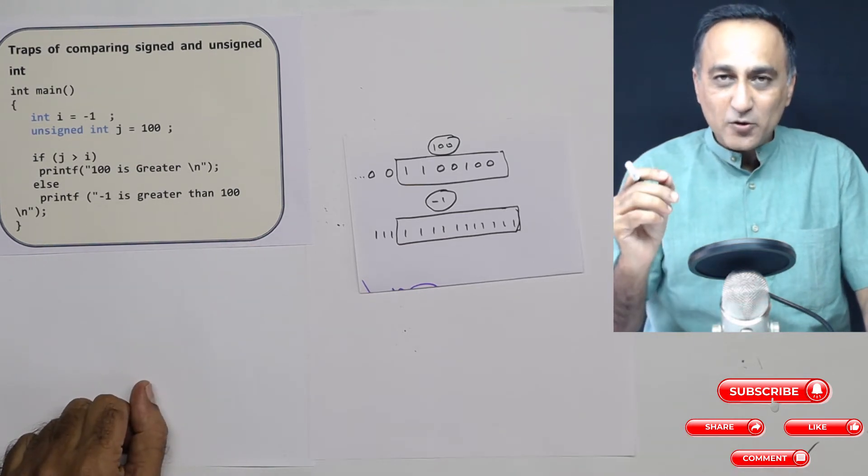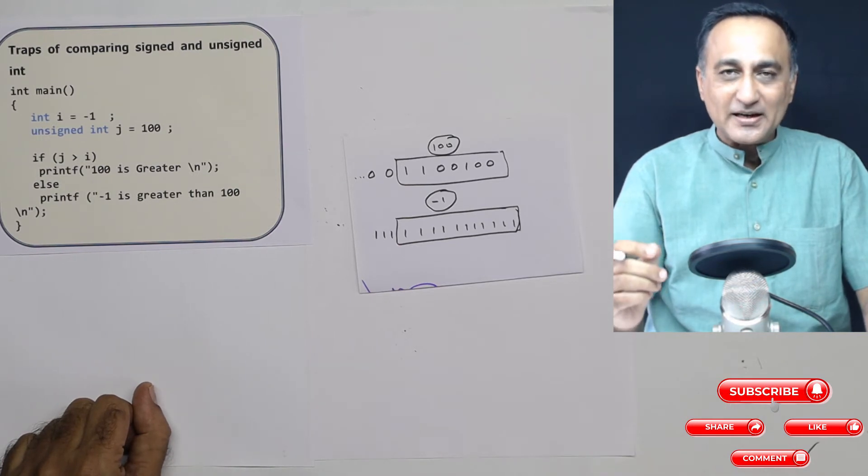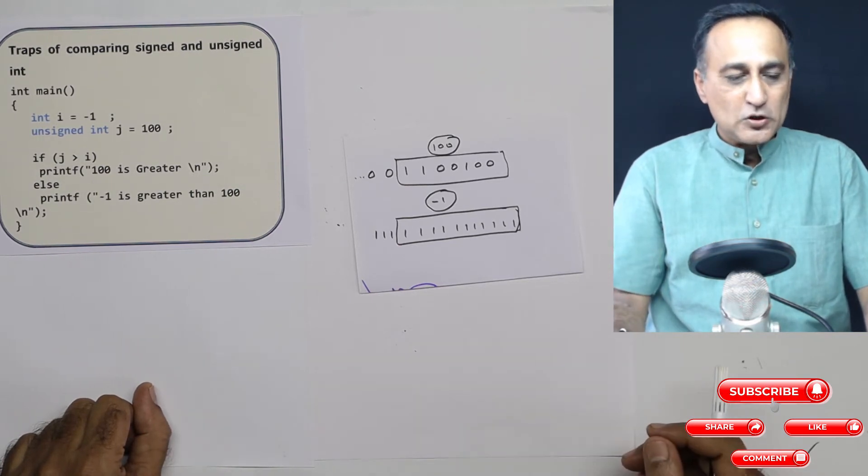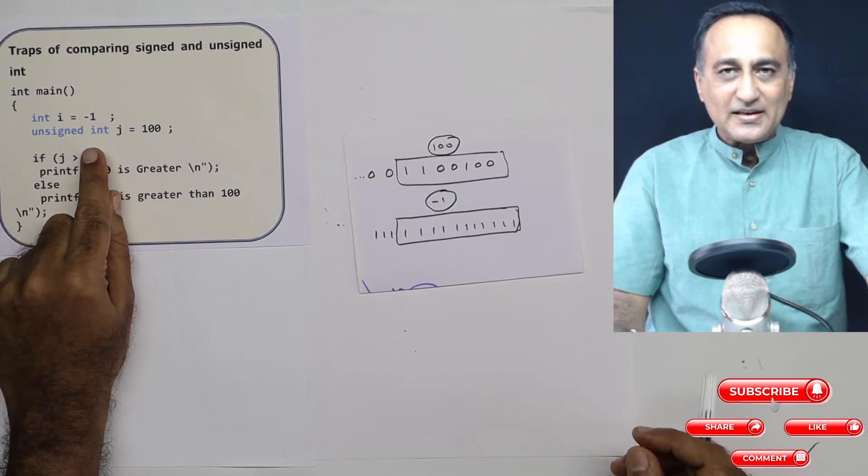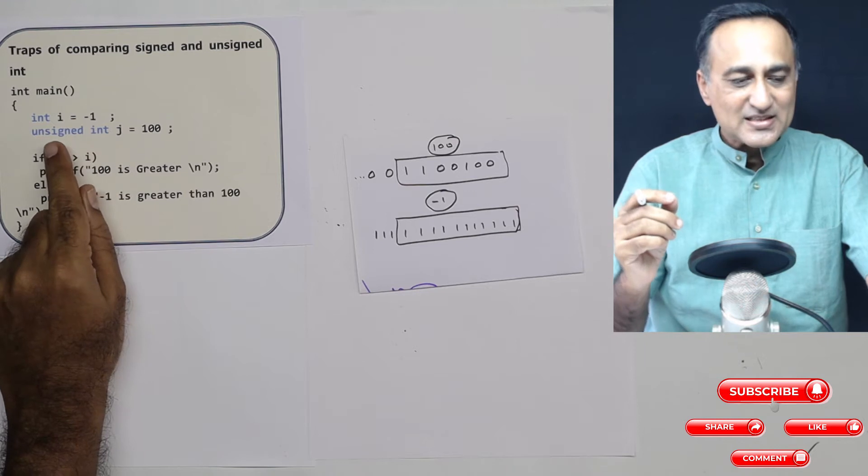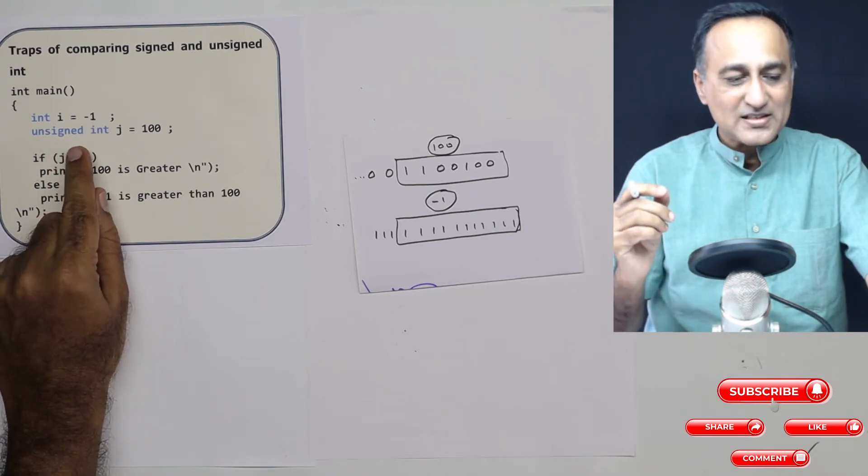There is a very good reason for it. This has got to do with implicit data type conversion. So if you look at it, the capacity of unsigned int is bigger than signed int. Therefore, the int gets promoted to an unsigned int.